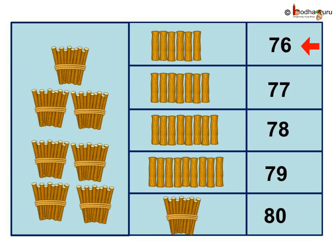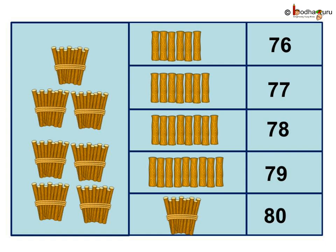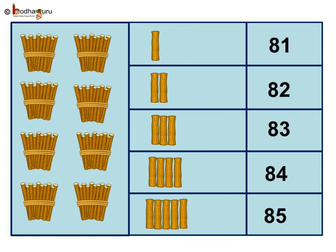7-6 is 76, 7-7: 77, 7-8: 78, 7-9: 79, 8-0: 80, which means 8 tens. Counting forward.